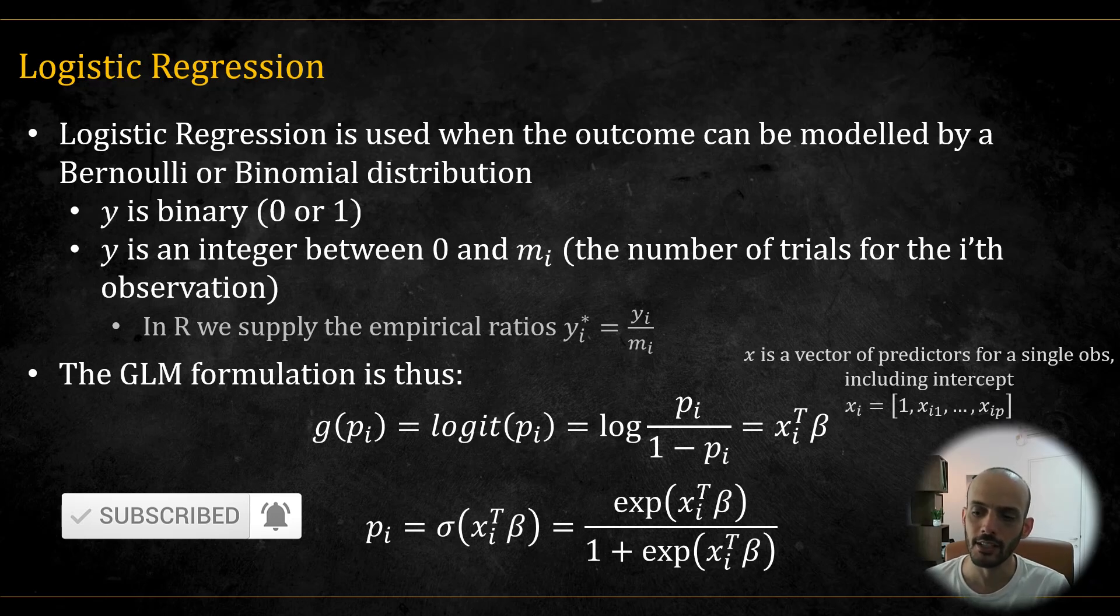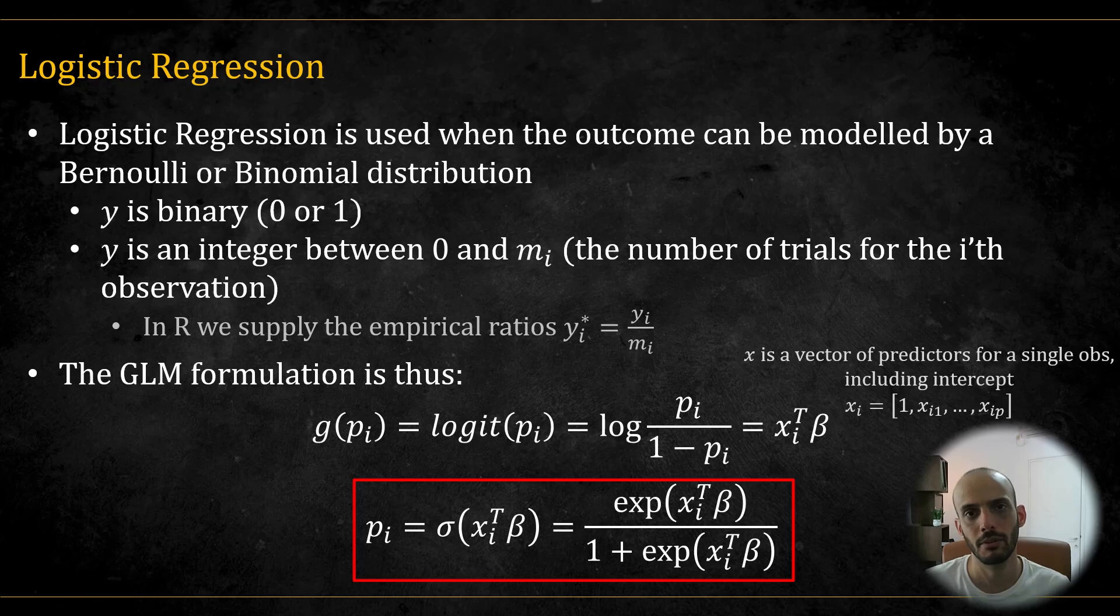So the logit of p is equal to log of p divided by 1 minus p, and we relate this to a linear predictor, meaning it's equal to x transpose beta, where x here is a vector where we add a 1 to account for the intercept. The inverse link function, the sigmoid, ensures that the predicted probabilities fall within a valid range of between 0 and 1, and is one of the main reasons why we are using this model.